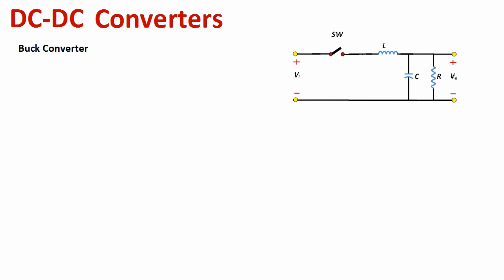The only problem is that the inductor must have a continuous current flowing through it. When the switch is open, we must have a path for the current to flow — and the only way to do that is by having a diode. That is why we have the diode in the circuit: it guarantees that current will continue to flow through the inductor when the switch is opened.